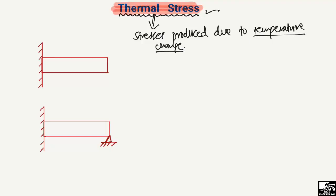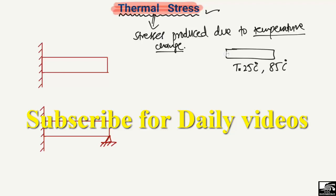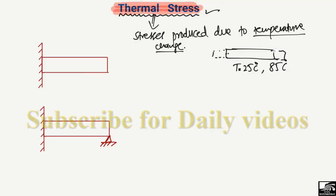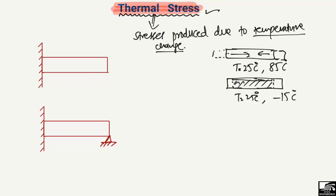For example, consider a rod at 25°C. If we increase the temperature to 85°C, the body expands due to heat and stresses are created inside — these are thermal stresses. Similarly, if we decrease the temperature to minus 15°C, the body contracts and its length decreases, again creating thermal stresses due to the temperature change.